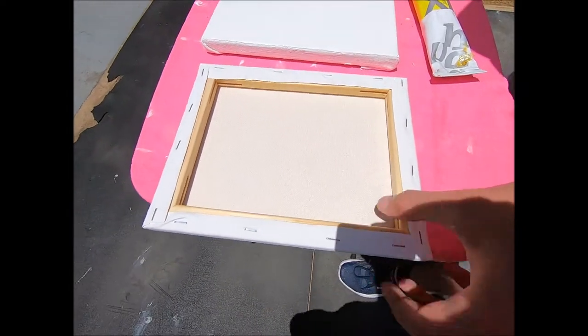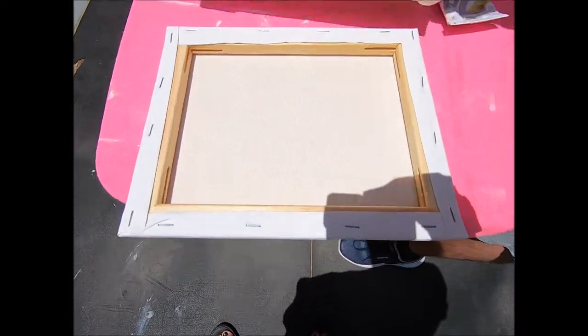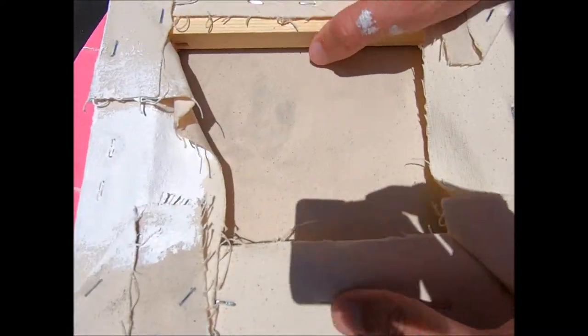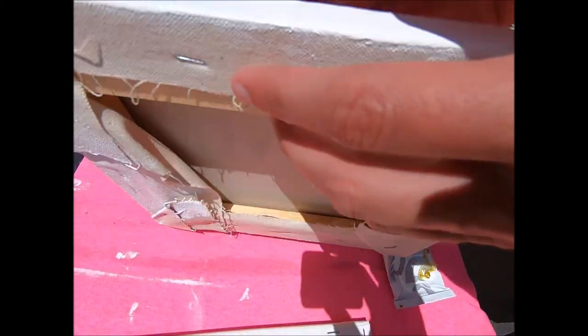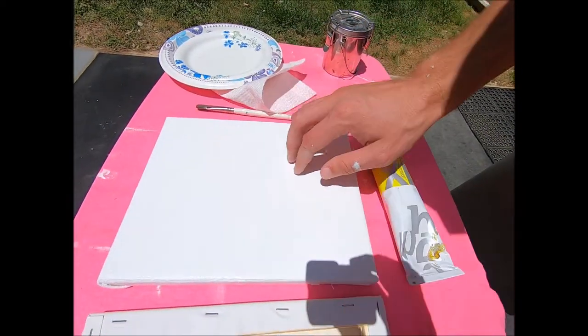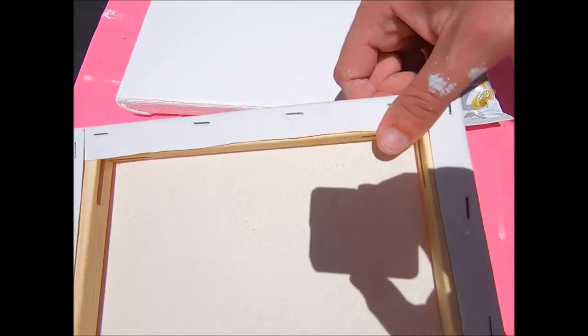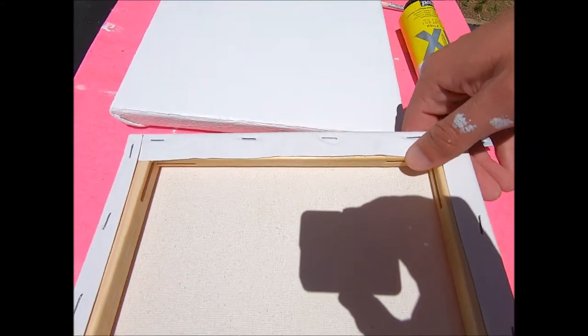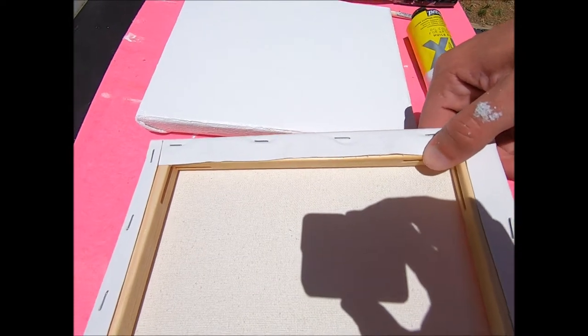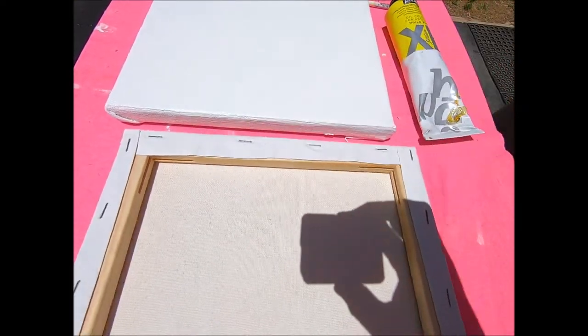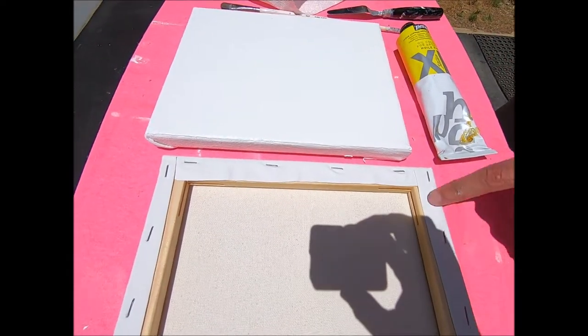Another thing, look at these tiny stretcher bars. A kindergartner could break those. These are much bigger. I use the Fredericks because they're good and thick. Look at these things, you could break those in half pretty easily. You can see they're already kind of warped. I mean, they do look nicer around the edges, but it's a big difference.